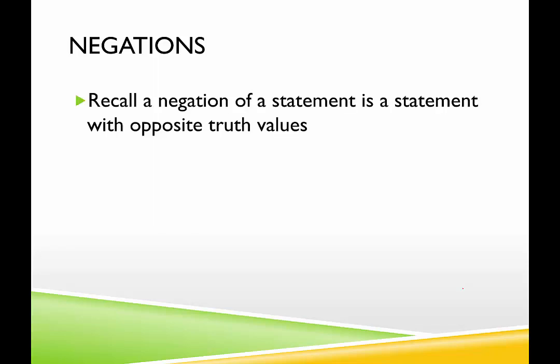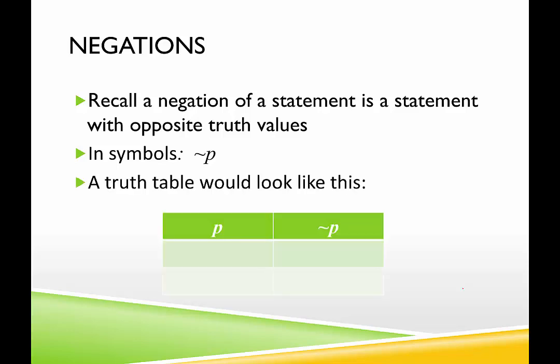The last thing we're going to look at is negations of statements. A negation of a statement has the opposite truth value of the given statement. So if I say 'the sky is blue,' that statement is true; therefore, its negation is false, and the negation would be 'the sky is not blue.' In symbols, we say tilde P, which reads 'not P.' The truth table only needs two rows because P can only be true or false. If P is true, not P is false; if P is false, not P is true.